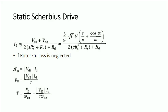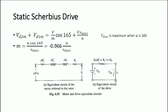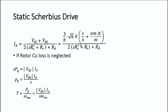The DC link current ID can be found as: ID = (VD1 + VD2) / (2·S·RS' + RR + RD), which equals (3√6·V·(S/N + cos α/M)) / (2·S·RS' + RR + RD), where RD is the resistance of the DC link inductor.